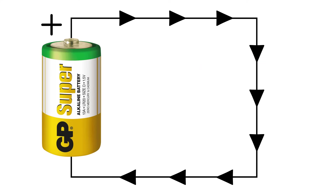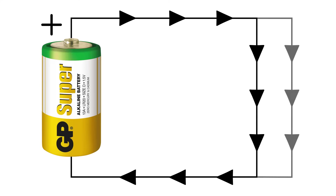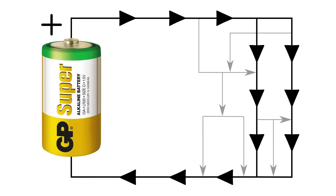It's often said that electricity takes the path of least resistance, but it's much more accurate to say electricity takes all available paths. You'll often see in circuits that the current takes many paths, all of which converge to a single return. The current flowing out of the power source is always equal to the current that returns to the power source.